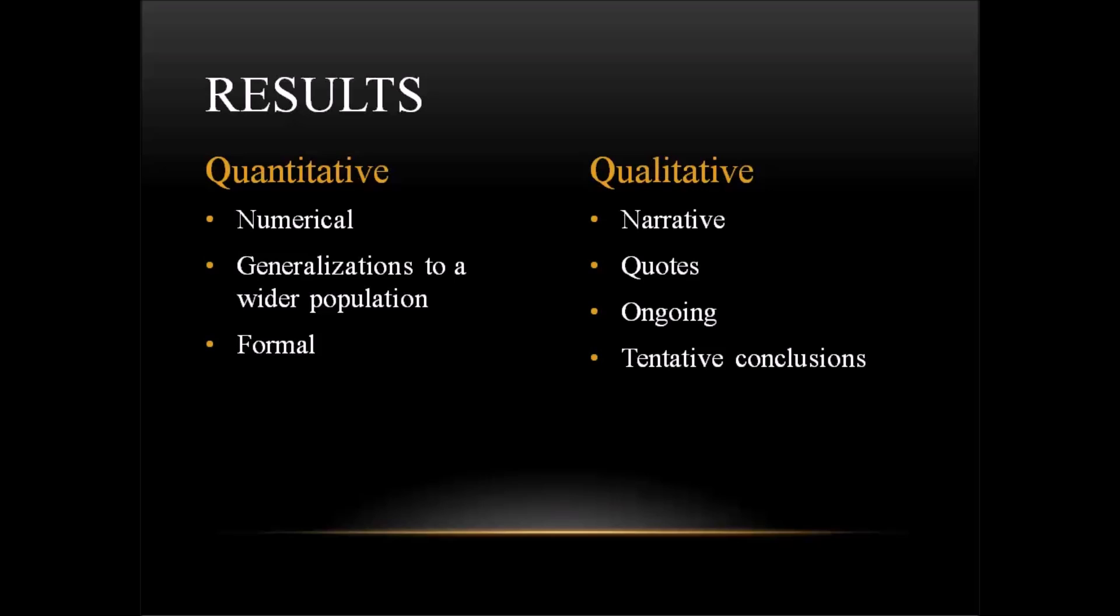Generalizations are made to a wider population. So a quantitative researcher will have a finding and the sample size might be 300 individuals from a certain population, and to one extent or another, that researcher is often going to make generalizations to a larger population. In one sense, that is a major point of conducting quantitative research. And the results are formal. There is a structured way to write the results, and quantitative researchers typically follow that structured method.